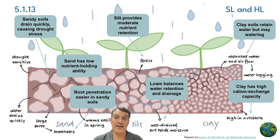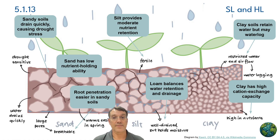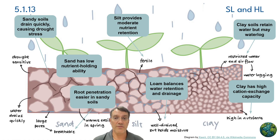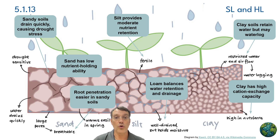Sandy soils drain quickly, making them sensitive to drought, and they have low nutrient-holding ability, although roots can penetrate them easily and they warm up quickly in spring. Clay soils retain water really well but may become waterlogged; they also have a very high cation exchange capacity (CEC) that allows them to hold nutrients. Silt provides a moderate level of nutrient retention and is well drained but still holds moisture long enough to make it available to plants. Loamy soils balance water retention and drainage, creating optimal conditions for plant growth.